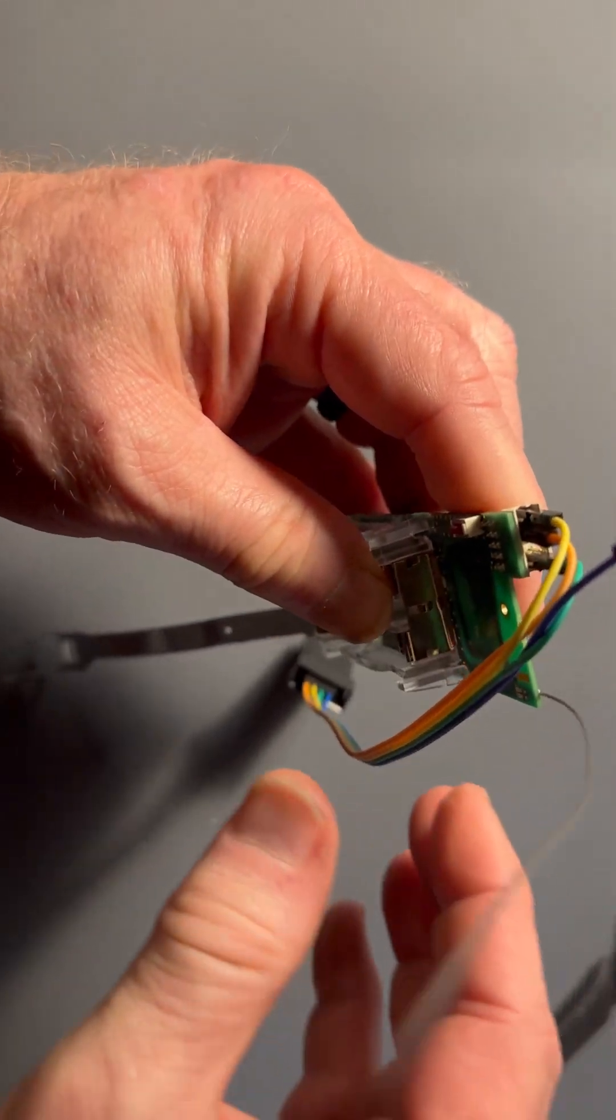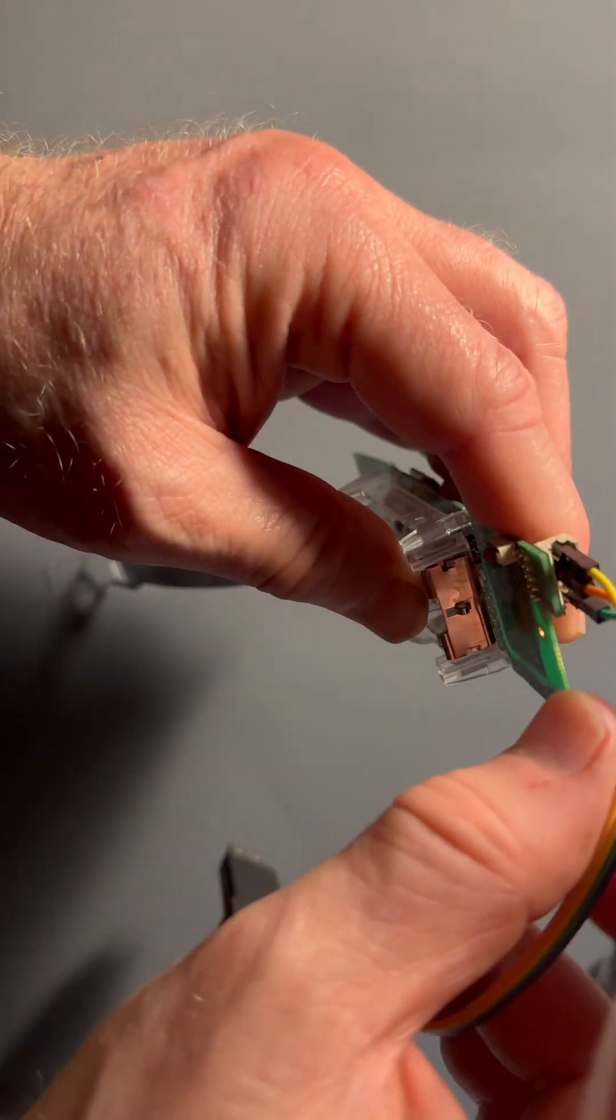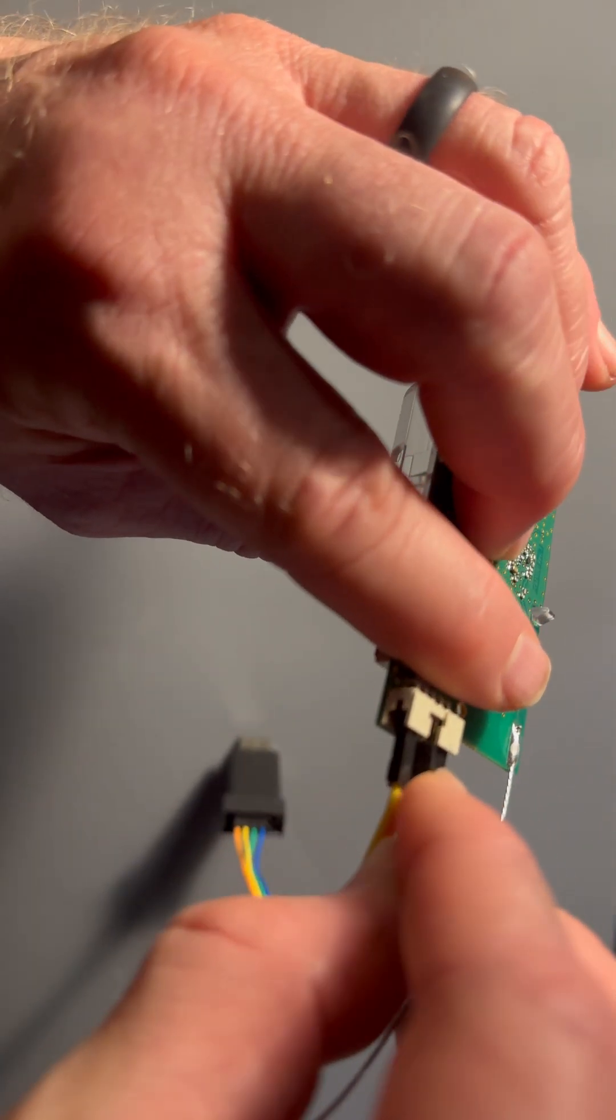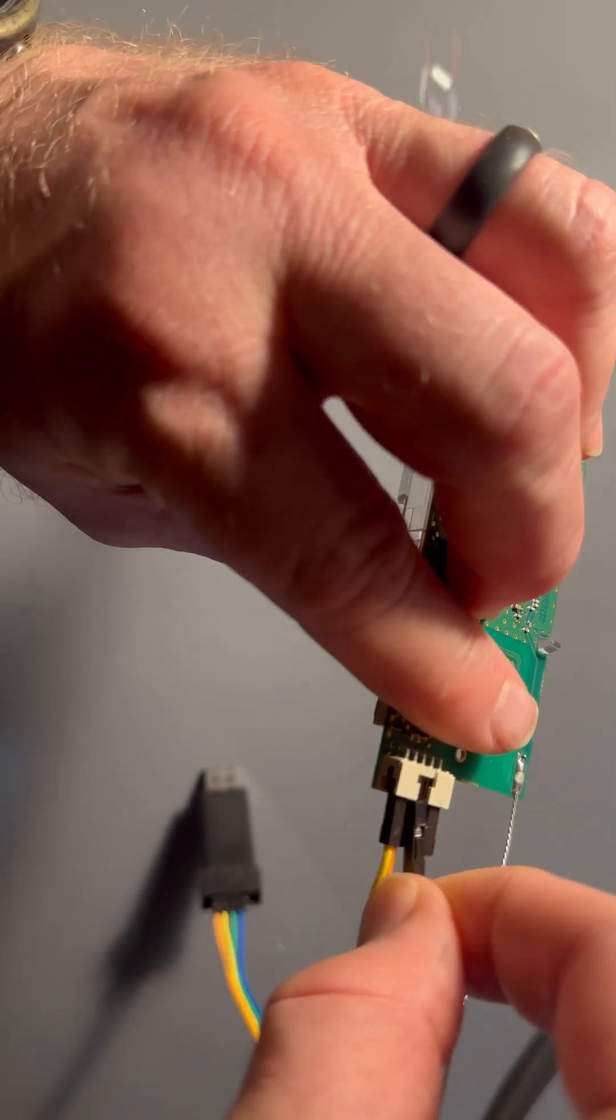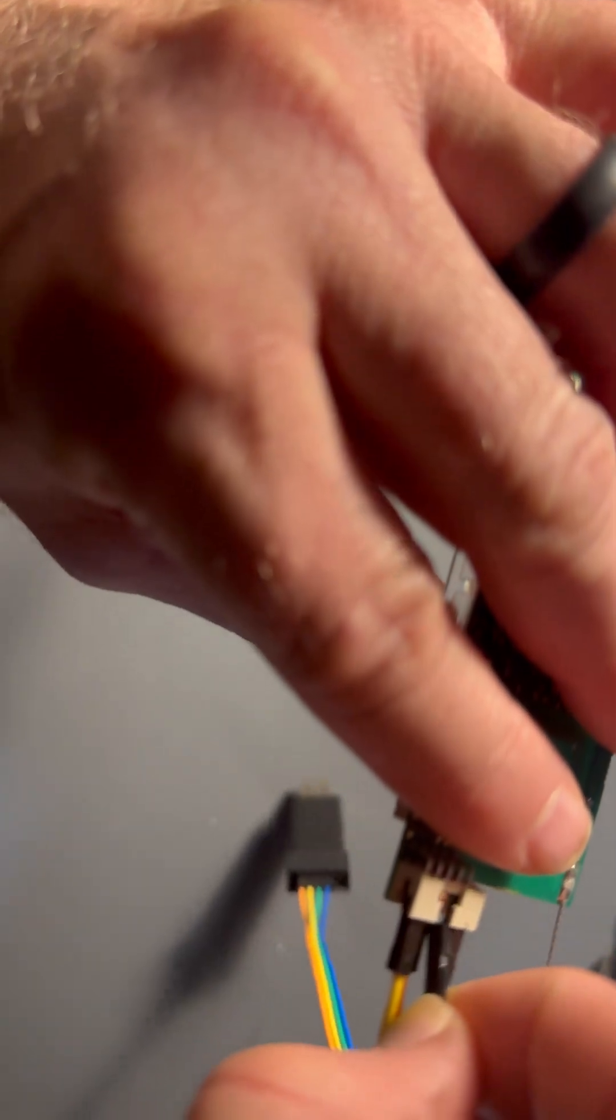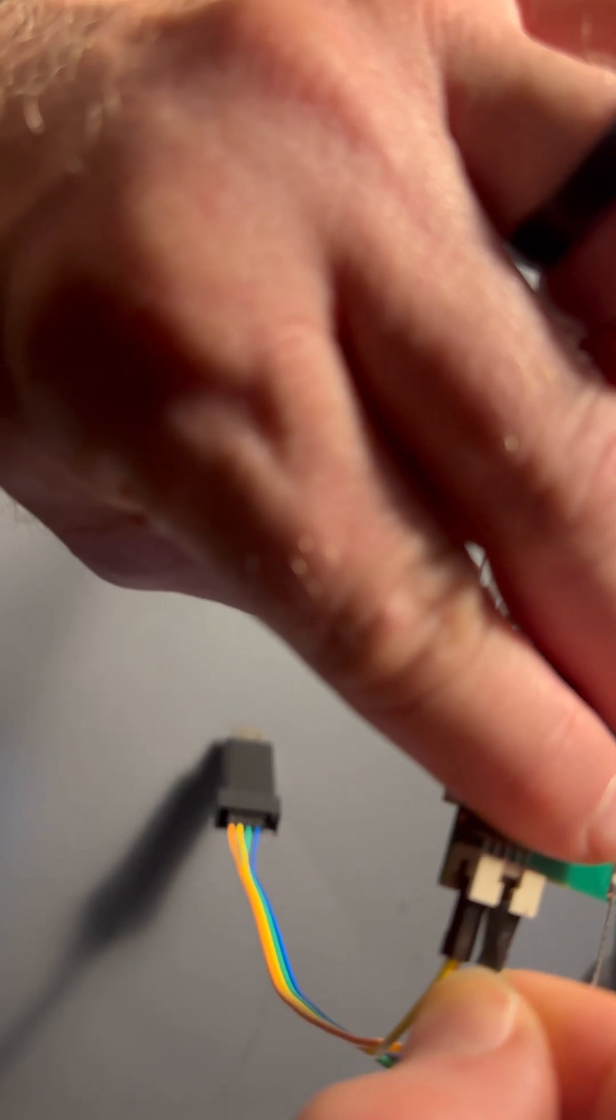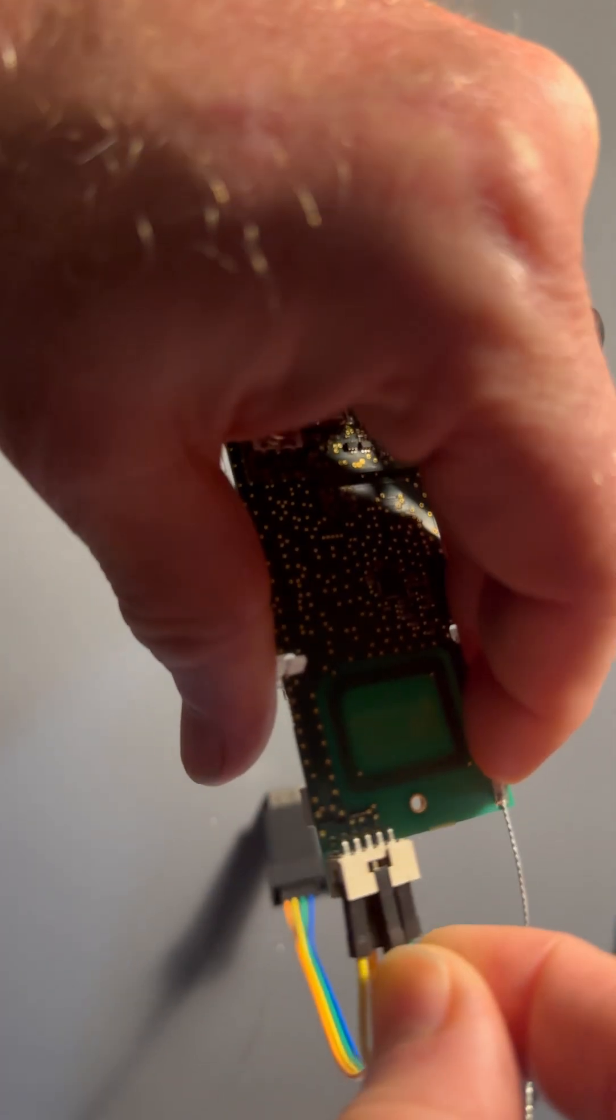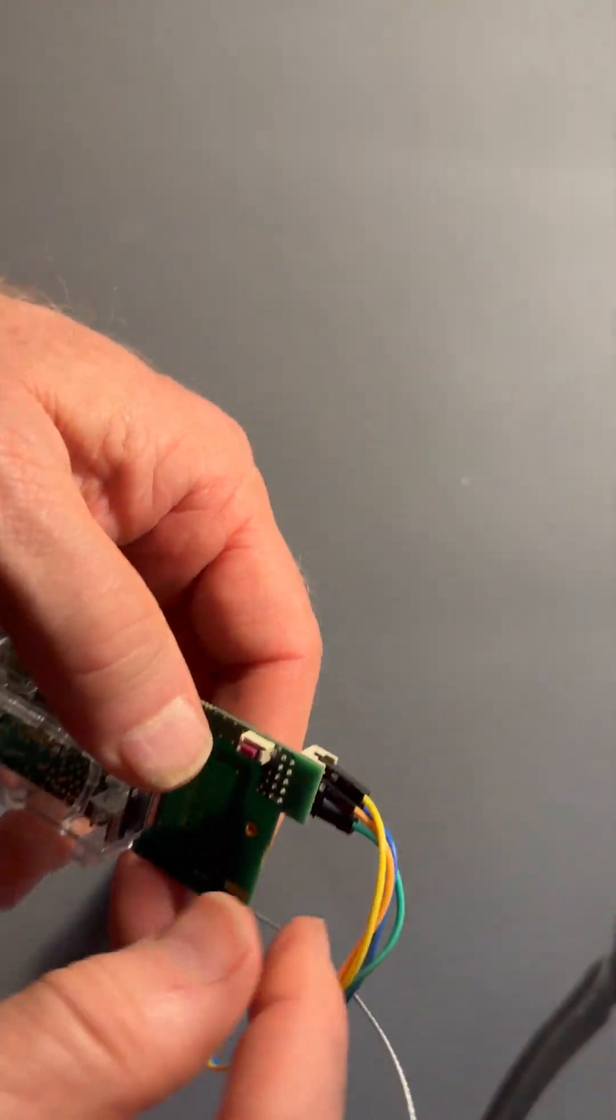I'll give you a better shot of this while it's still hooked up. And then blue goes to the 3.3V. That's going to be pin 5, right here in the middle. And there it is hooked up, as you can see.